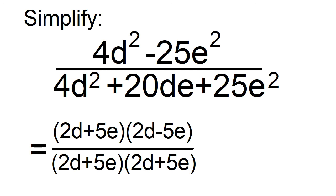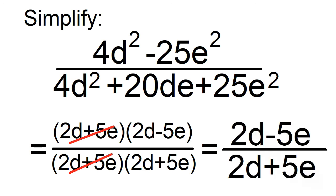Divide out 2d plus 5e. The answer is 2d minus 5e over 2d plus 5e. Thanks for watching.